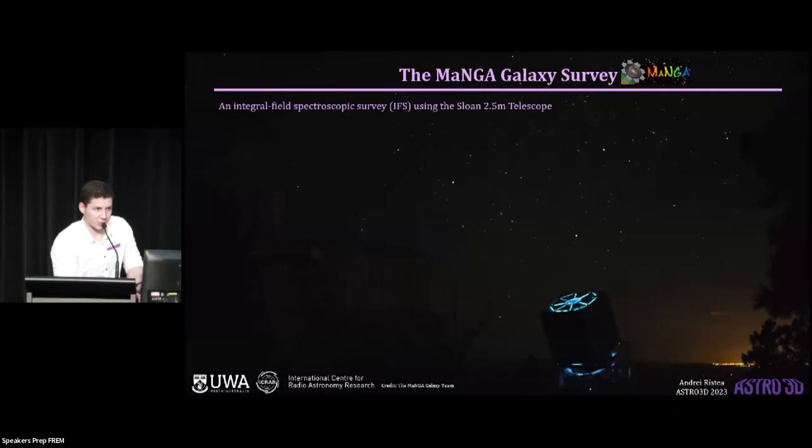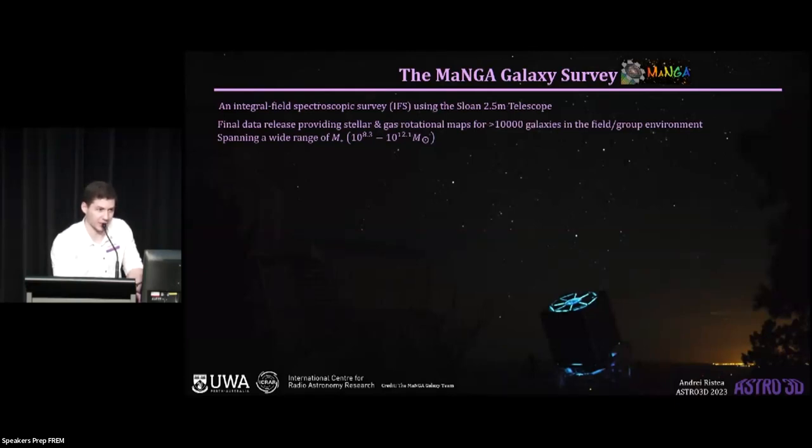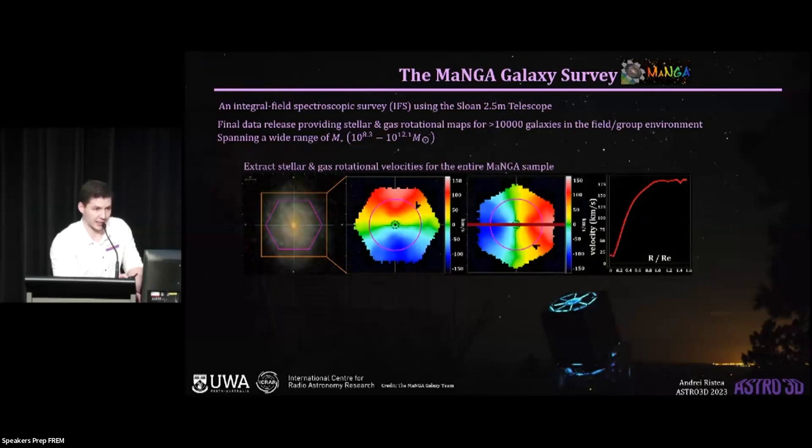So, to tackle these questions and shortcomings, I've used the Manga Galaxy Survey, which is an integral field spectroscopic survey similar to SAMI. Its final data release is providing stellar and gas kinematic maps for over 10,000 galaxies in the field and group environment. And my goal in this project was to extract stellar and gas rotational velocities for these galaxies. Now, I won't go too much into the details of the methodology, but I will say that for that I'm using basically a simple slit approach in which I find the galaxy's main kinematic axis, which is shown here by the dark red line, and I extract the rotational velocity along this line.